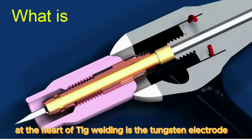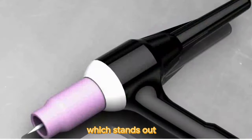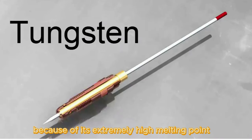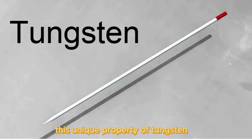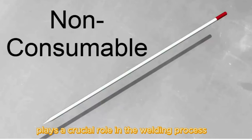At the heart of TIG welding is the tungsten electrode, which stands out because of its extremely high melting point. This unique property of tungsten plays a crucial role in the welding process.